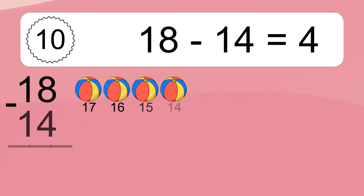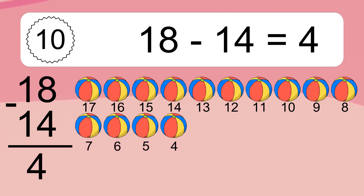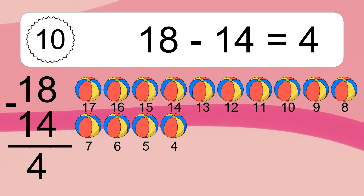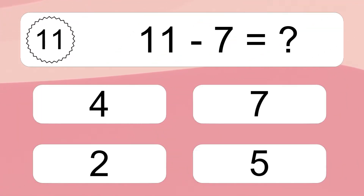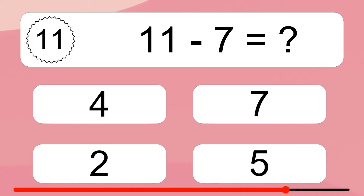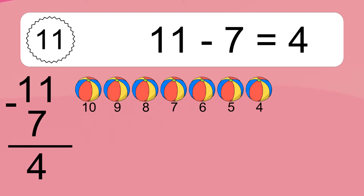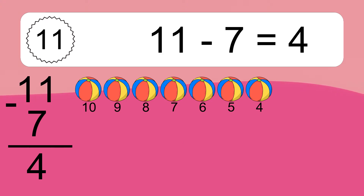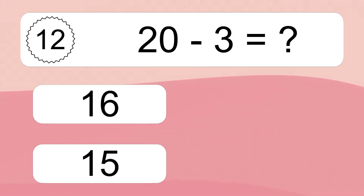18 minus 14 equals what? 18 minus 14 equals 4. 11 minus 7 equals 4. Let's count it: 10, 9, 8, 7, 6, 5, 4.